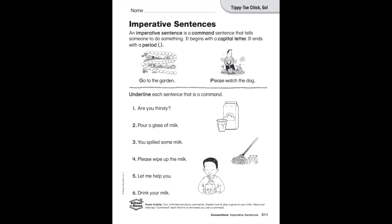Number one: 'Are you thirsty?' Is that a command? No, it is not. What is your first clue to tell you that's not a command? I'm going to point to it. Look, look, look—that is a question mark, not a period. Imperative sentences end in a period. This is not an imperative sentence. We are not underlining it. Number two: 'Pour a glass of milk.' Ends in a period—first clue. Telling you to do something—second clue. That's right, we need to underline sentence number two.